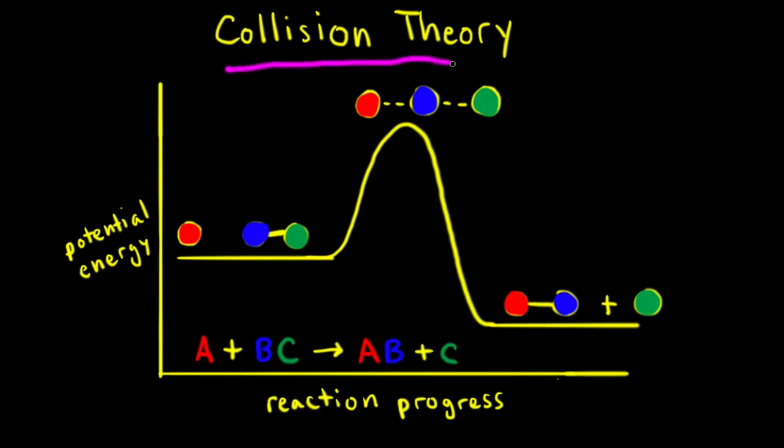Collision theory can be related to Maxwell-Boltzmann distributions. Collision theory says that particles must collide in the proper orientation and with enough kinetic energy to overcome the activation energy barrier.